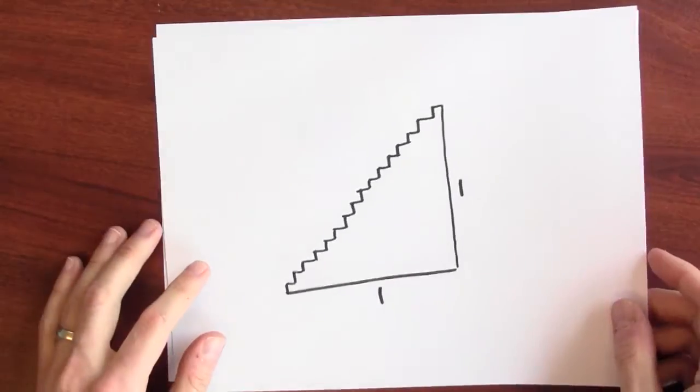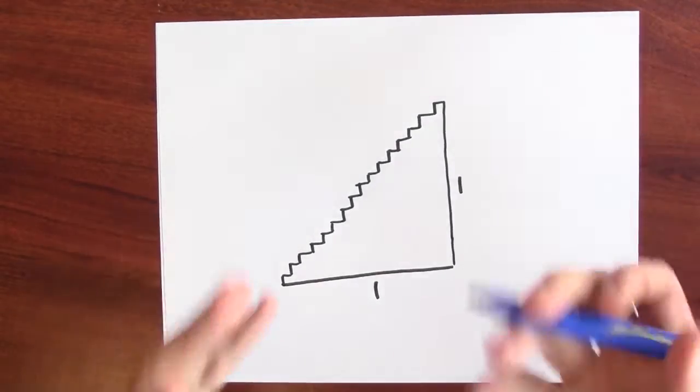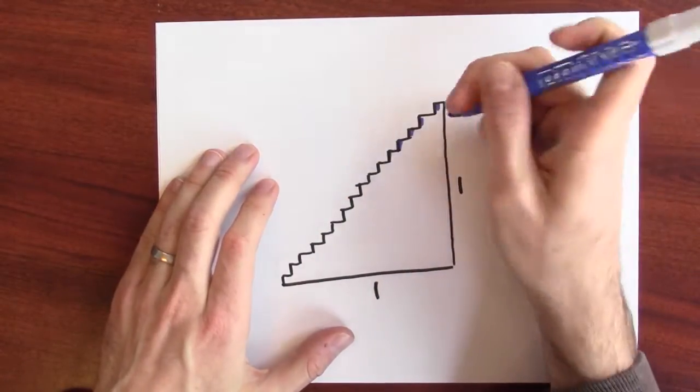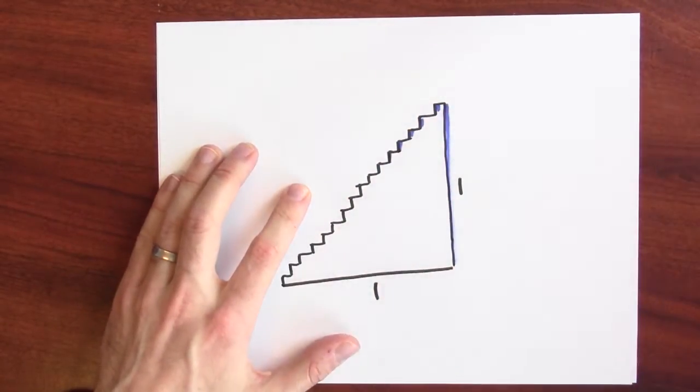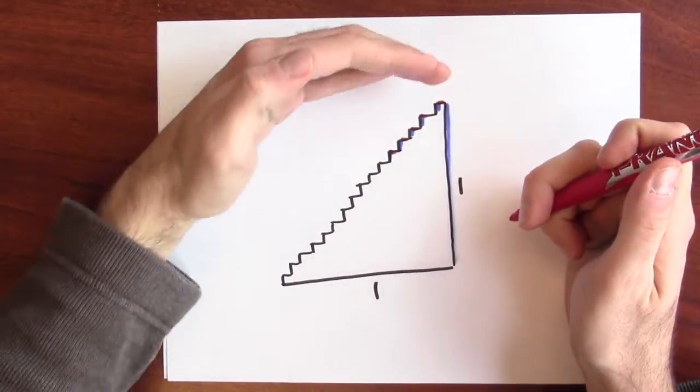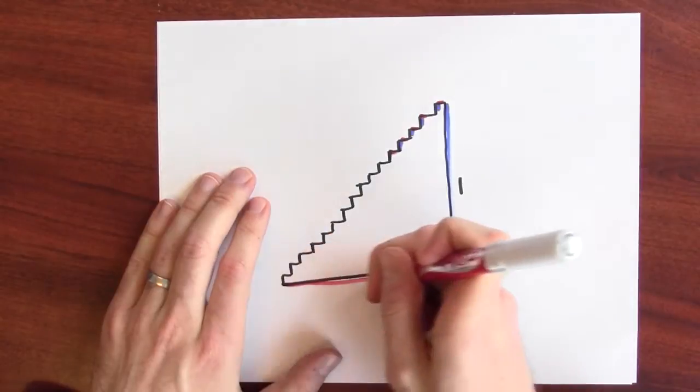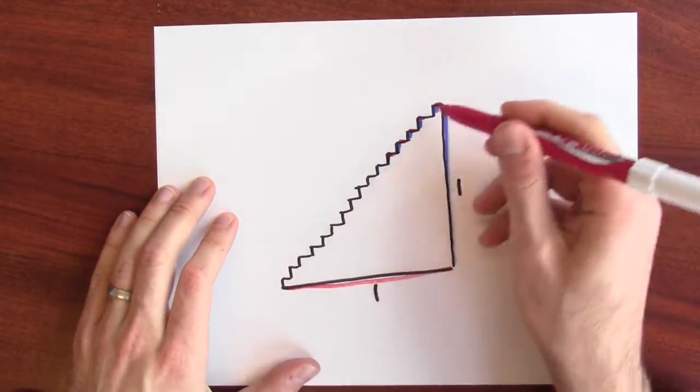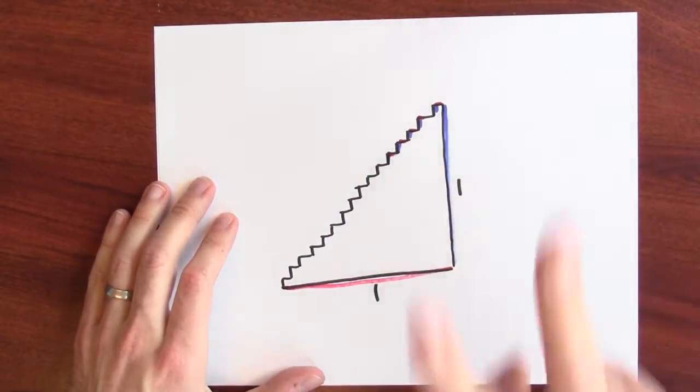What happens if I make those stairs even smaller? The length is still 2. Because again, all of the vertical sections of the staircase add up to this length. And all of the horizontal sections of the staircase, and I imagine pushing them all down, add up to this length. So, the total length of the staircase is still 2.